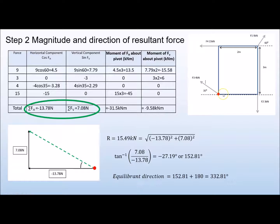To keep the system in static equilibrium, we need an equilibriant of the same magnitude — 15.49 kN — acting in the opposite direction. Simply add 180° to the resultant direction to get the direction of the equilibriant. The resultant force is heading in this direction, so the equilibriant acts directly opposite.